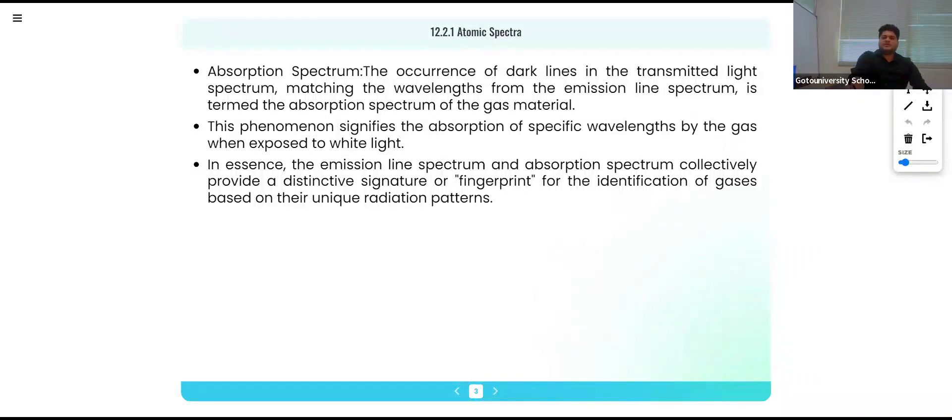Absorption spectrum: the occurrence of dark lines in the transmitted light spectrum, matching the wavelengths from the emission line spectrum, is termed as absorption spectrum of the gas material. This phenomenon signifies the absorption of specific wavelengths by gas when exposed to white light.